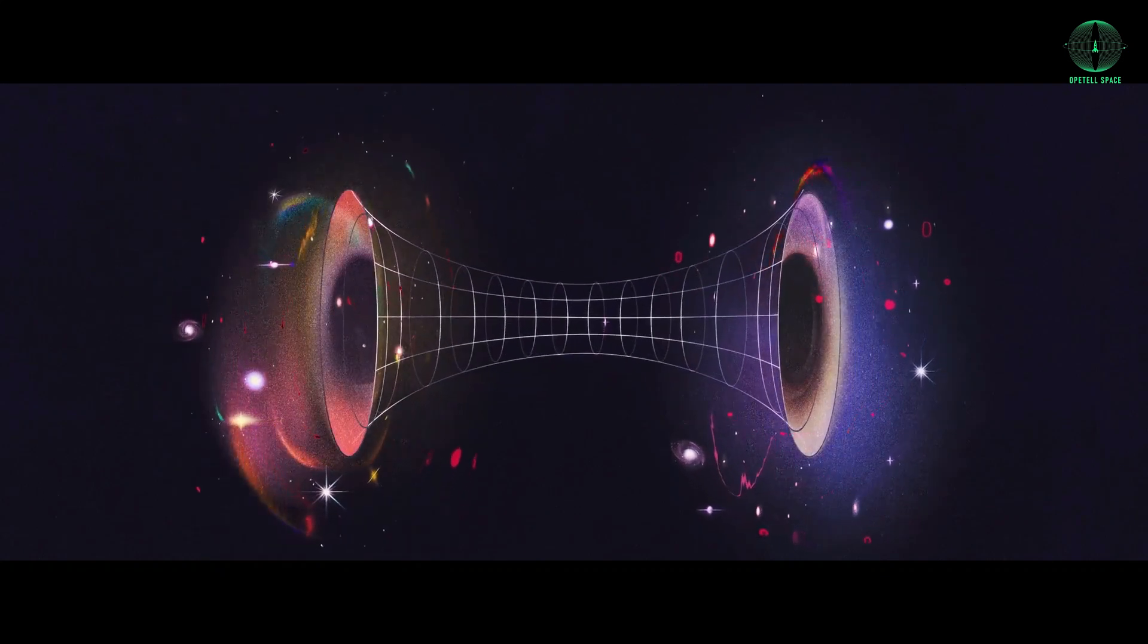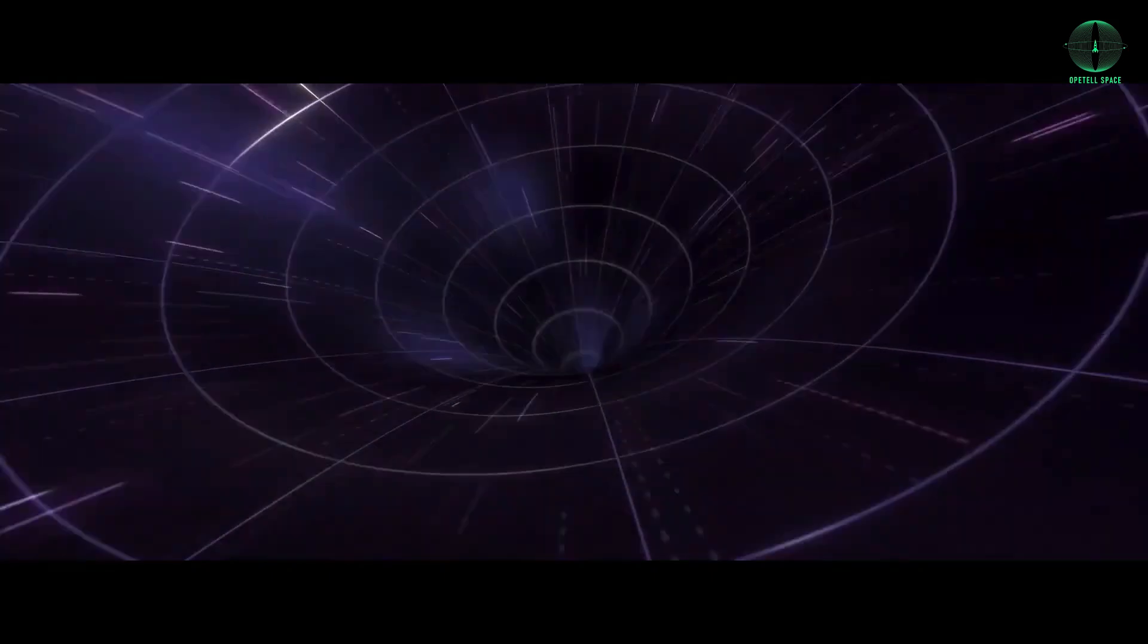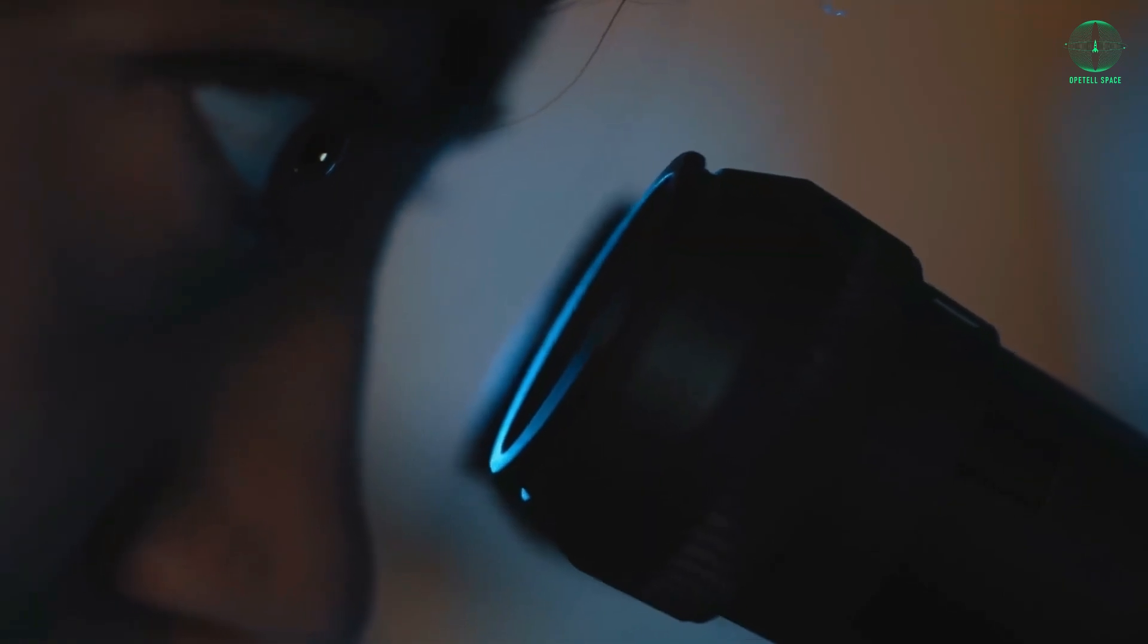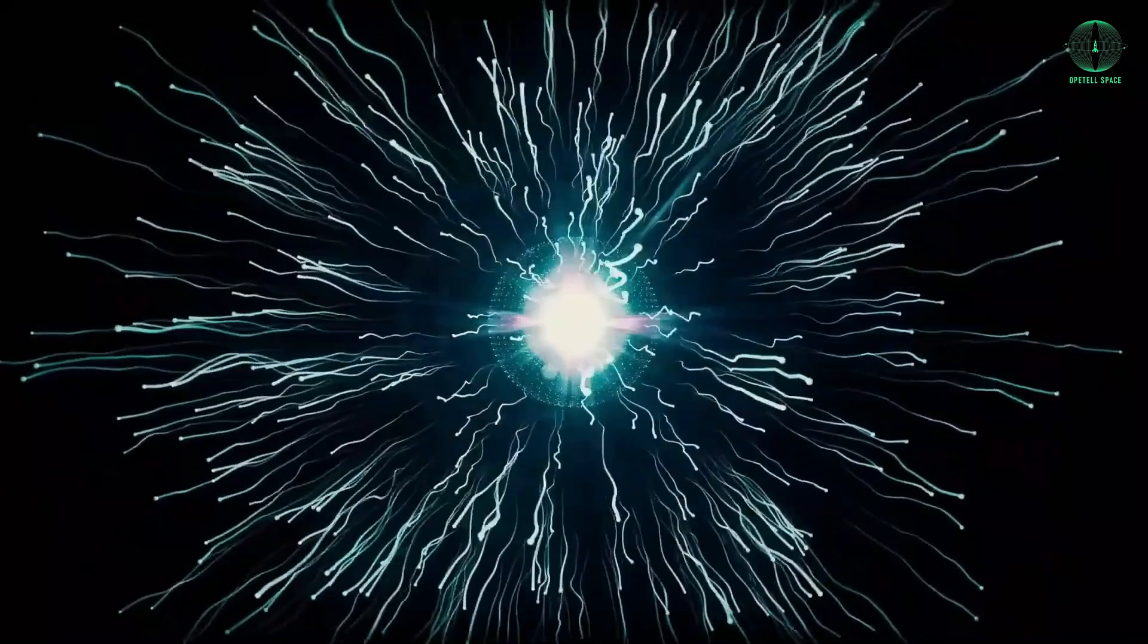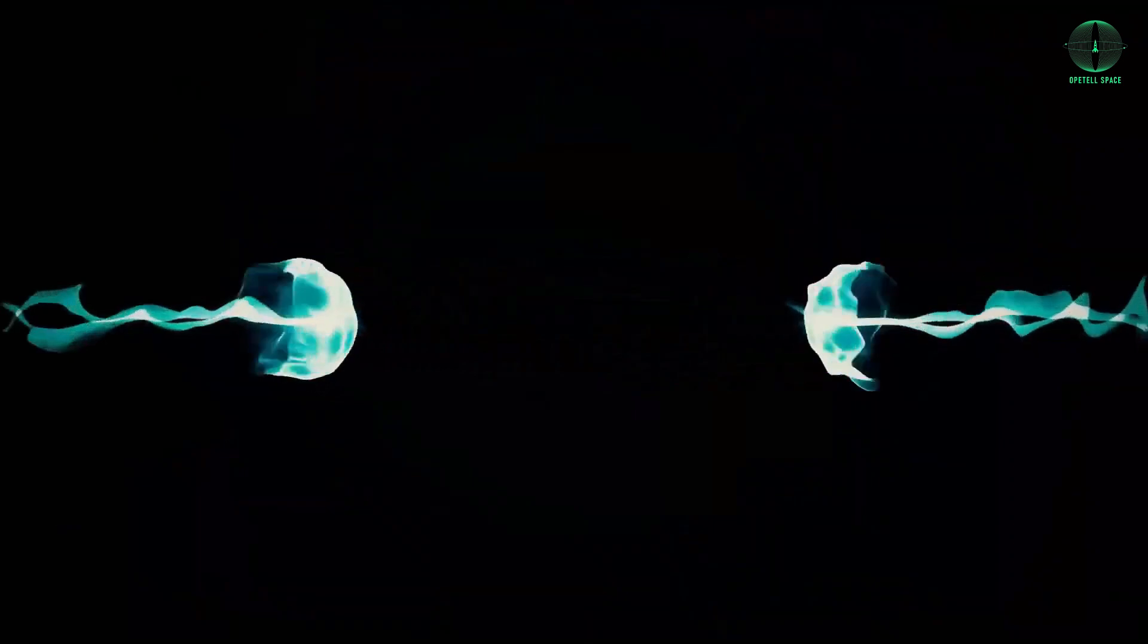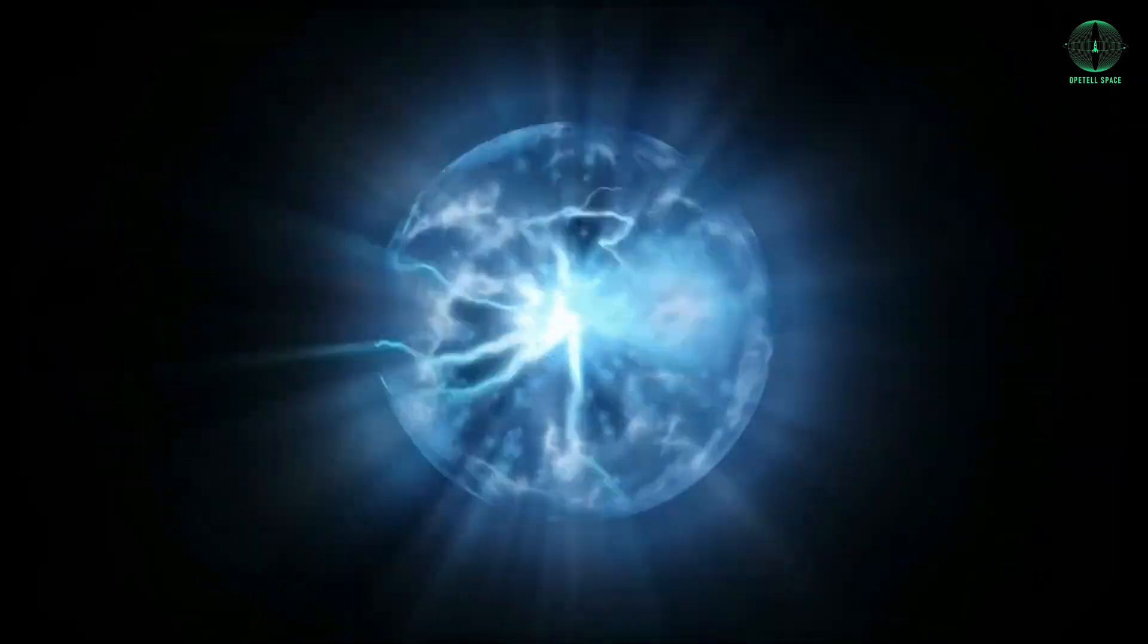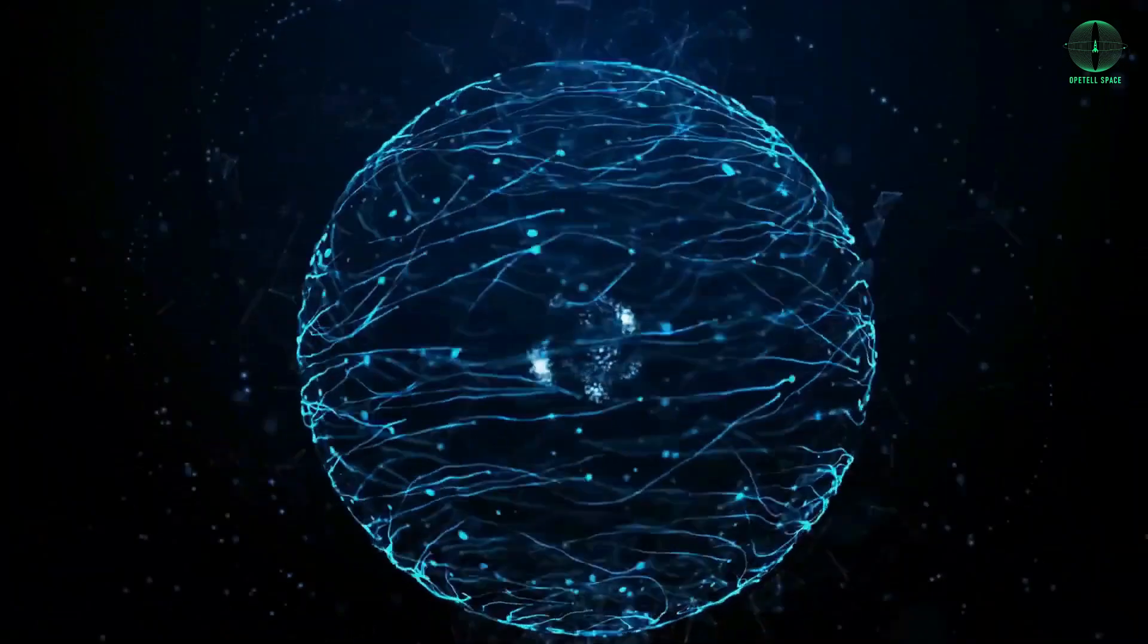So what existed before the Big Bang? According to loop quantum cosmology, it might have been another phase of the universe, the contraction phase preceding the quantum jump. In loop quantum cosmology, the concept of a quantum bridge is intriguing. This bridge signifies a transitional stage linking our universe to its predecessor. Instead of a singularity, the universe undergoes a quantum leap, transitioning from contraction to expansion. This shift can be viewed as a quantum bridge from the old universe to the new one.